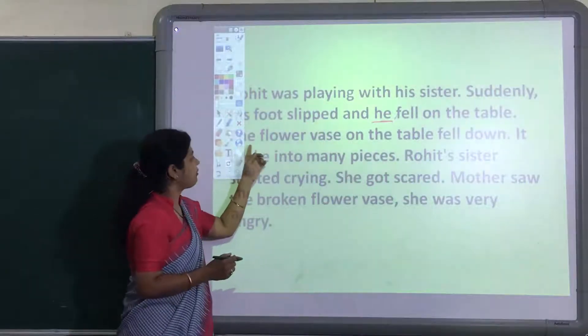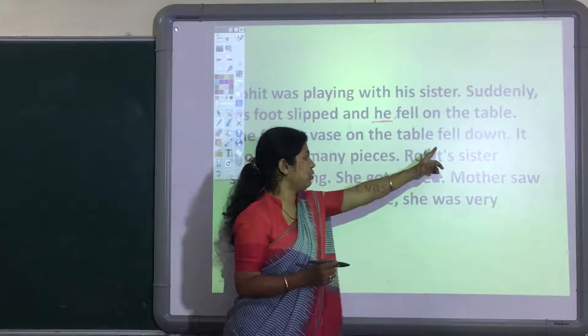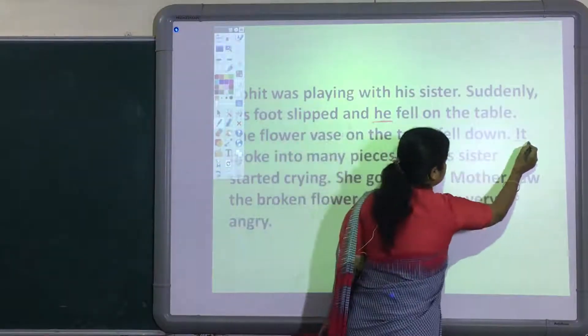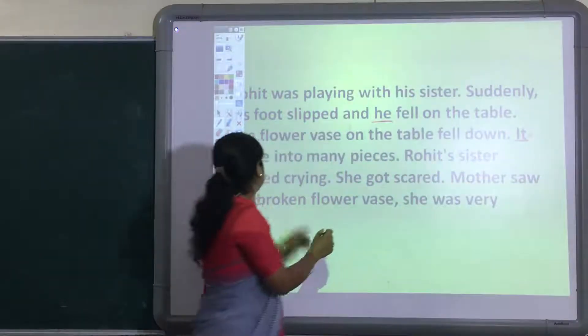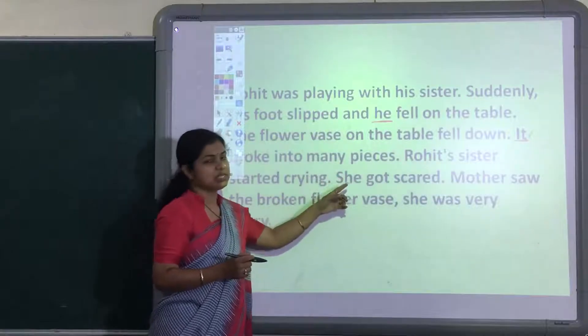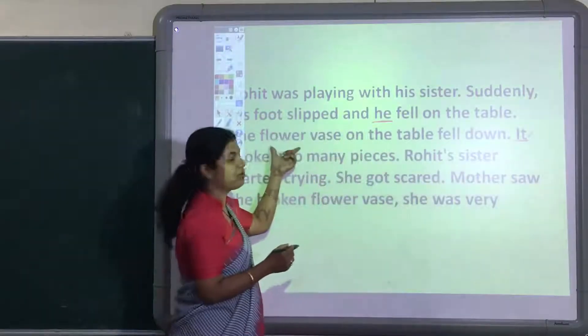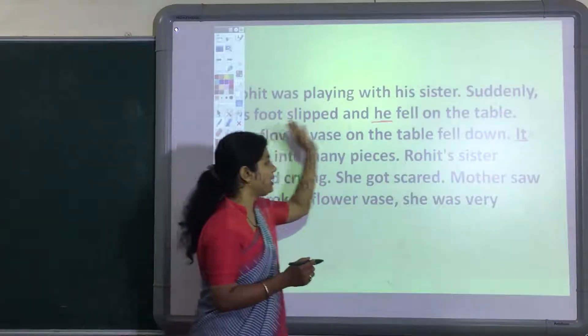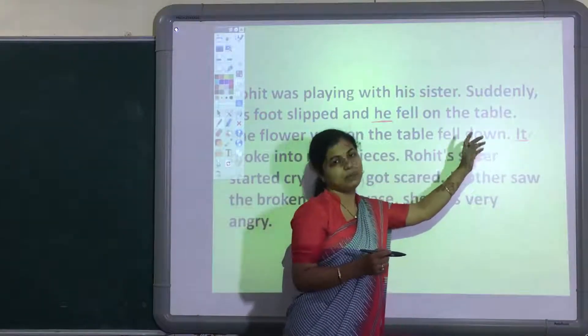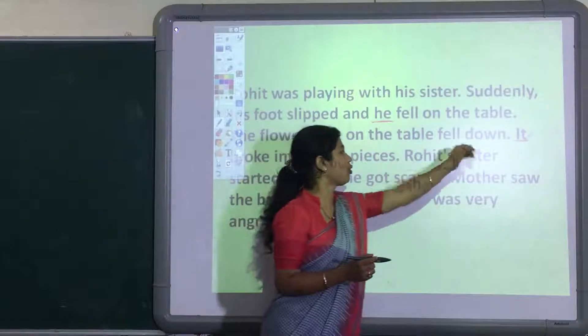Now, see the next sentence: the flower vase on the table fell down. It broke into many pieces. Now, again here, this 'it' pronoun came for flower vase. We are not repeating again, but instead of that we are using pronoun.